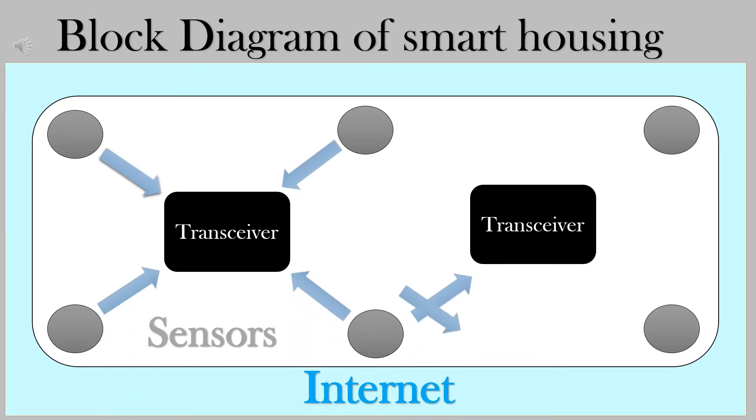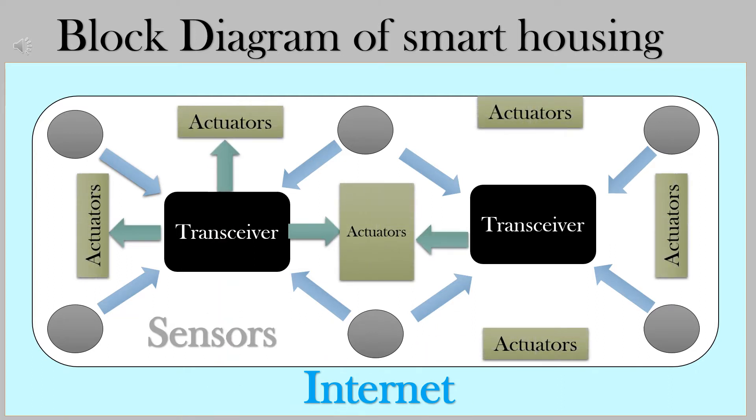Transceivers which receives and transmits data. If sensors sense any motion then automatically it sends a signal to transceivers. As the transceivers get the signal then it alerts actuators. And this actuators helps to perform tasks. And in this way we can make our house in a smart way as every work can be done in time without any intervention.